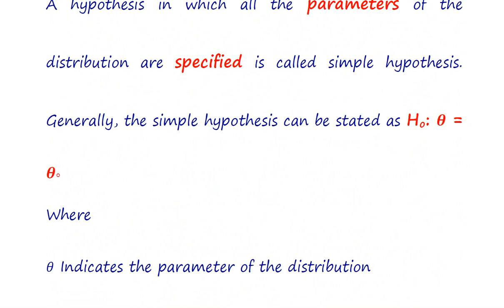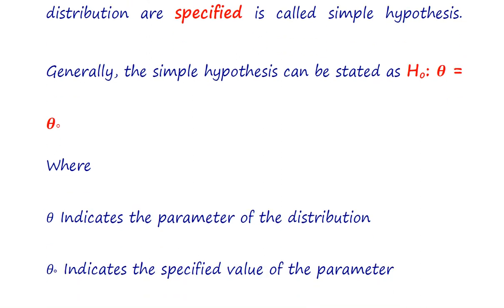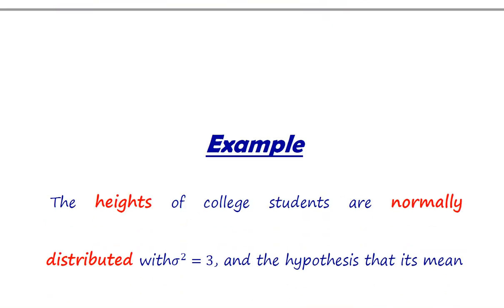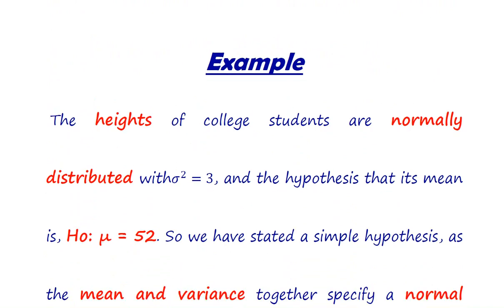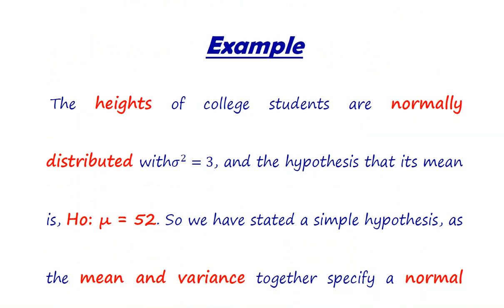Generally, the simple hypothesis can be stated as H naught — denoting the null hypothesis — theta is equal to theta naught. Here theta represents the parameter and theta naught indicates any specified value of the parameter.